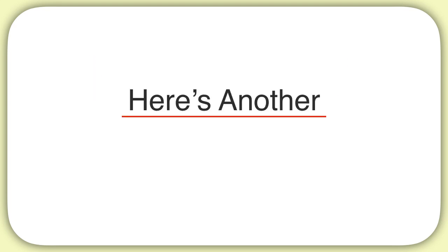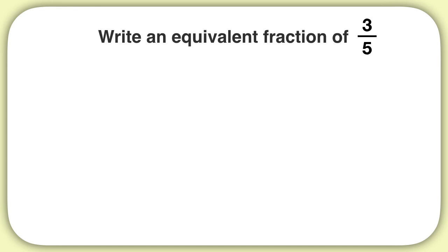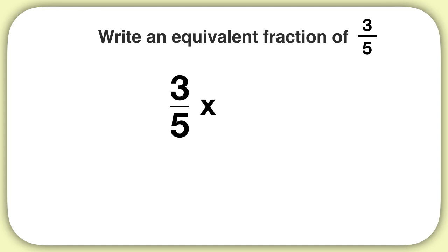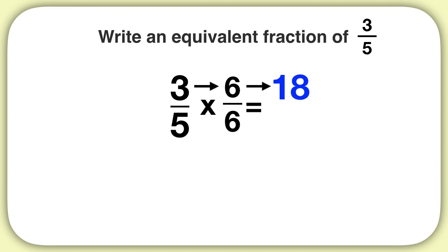Here's another problem to practice with. Write an equivalent fraction of 3 fifths. I could take my fraction 3 fifths — remember, I have to multiply the numerator and denominator by the same thing. From that list, the only option was 6 over 6. 3 times 6 is 18, and 5 times 6 is 30. So 3 fifths is equivalent to 18 thirtieths.